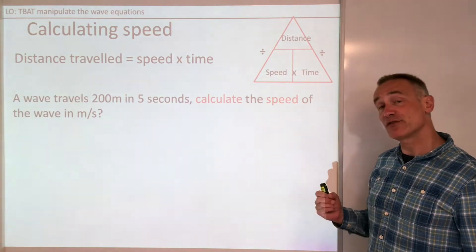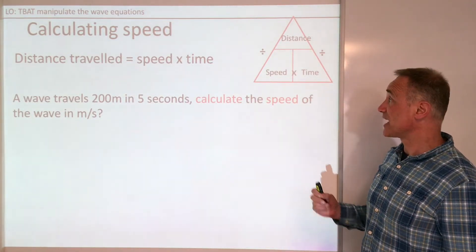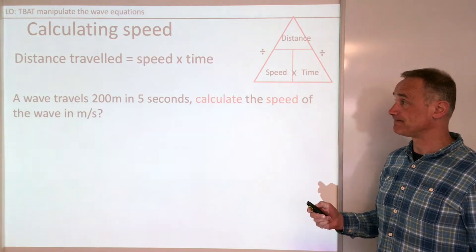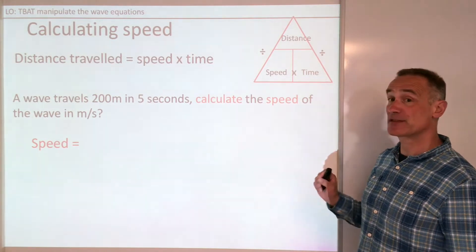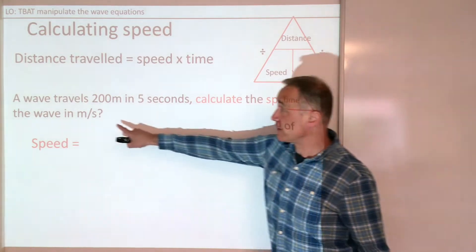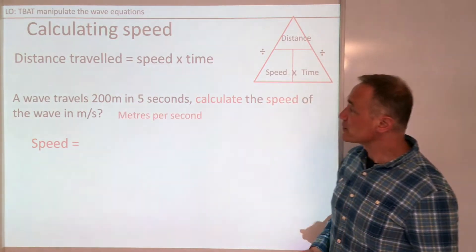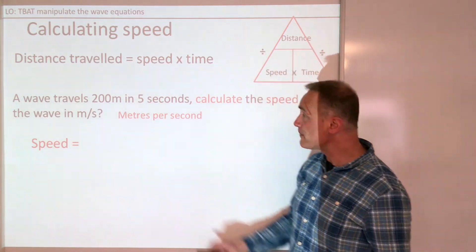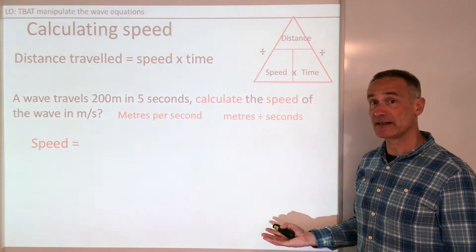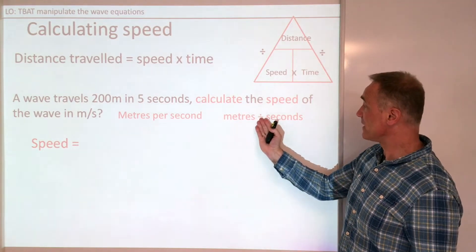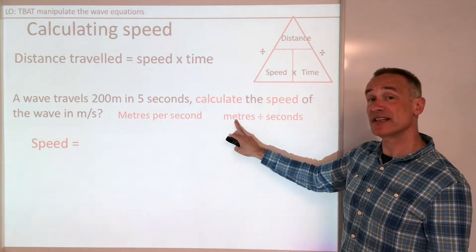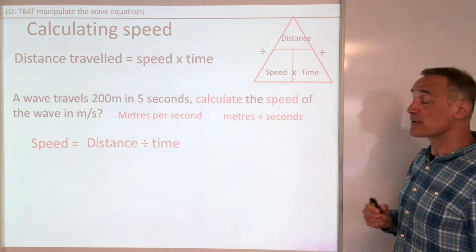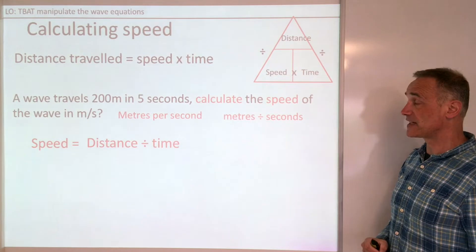A wave travels 200 metres in 5 seconds. Calculate the speed of the wave in metres per second. If you can't remember the equation for speed, it's really good to look at the units, because metres per second means metres divided by seconds. And 'per' means divided by. Metres is distance, seconds is time. So speed is distance divided by time.